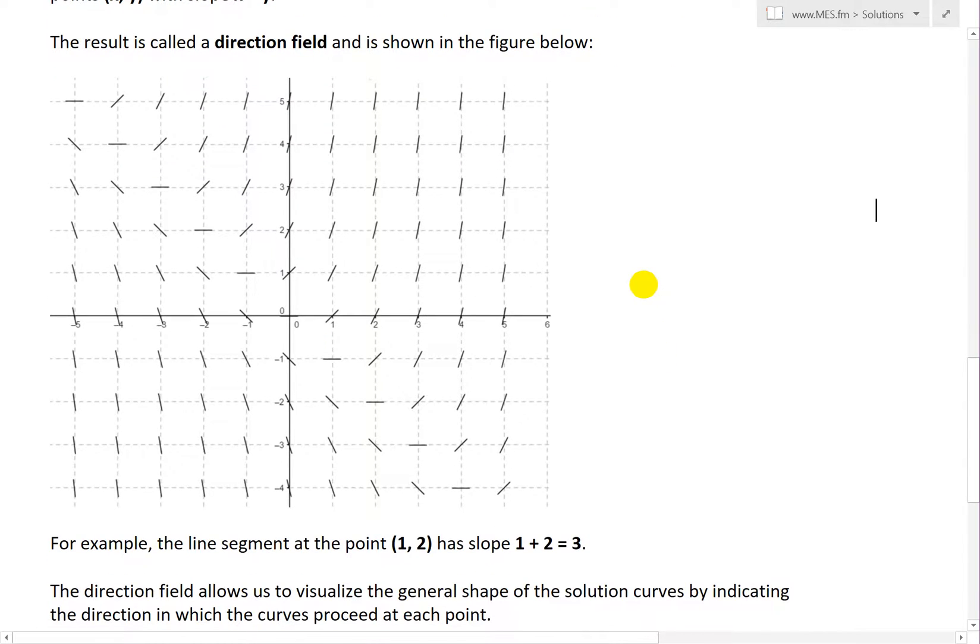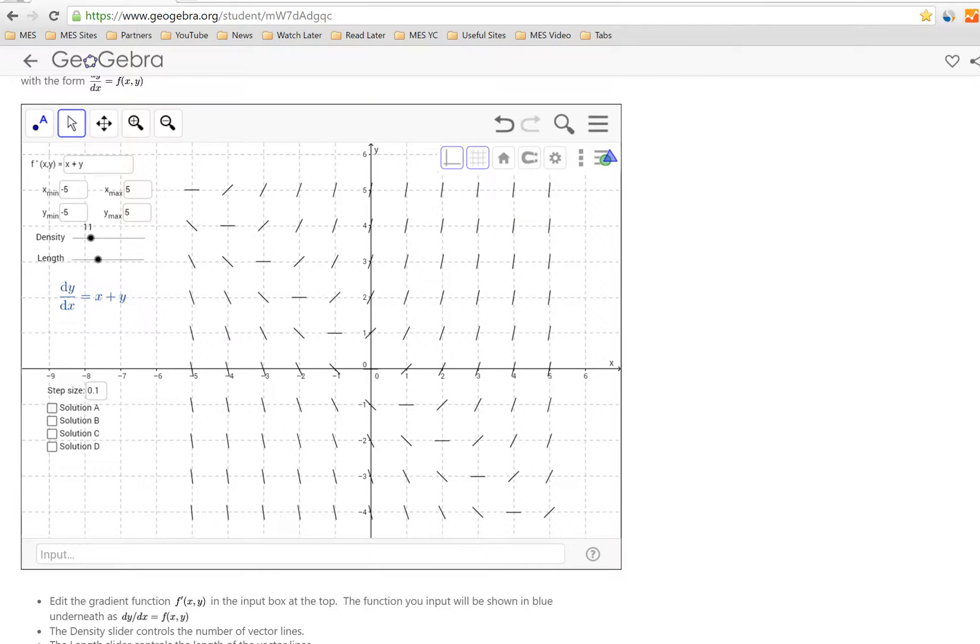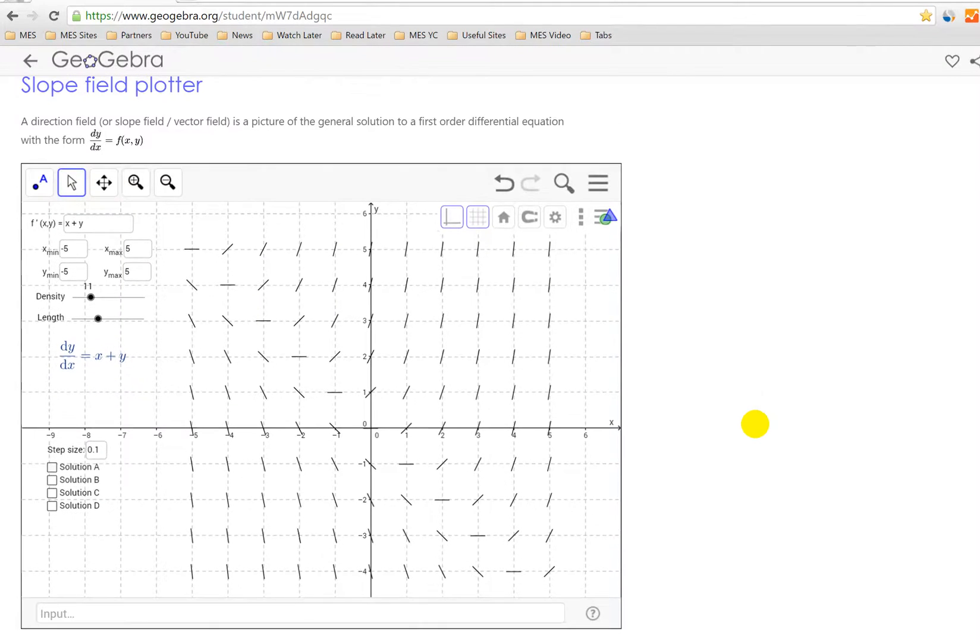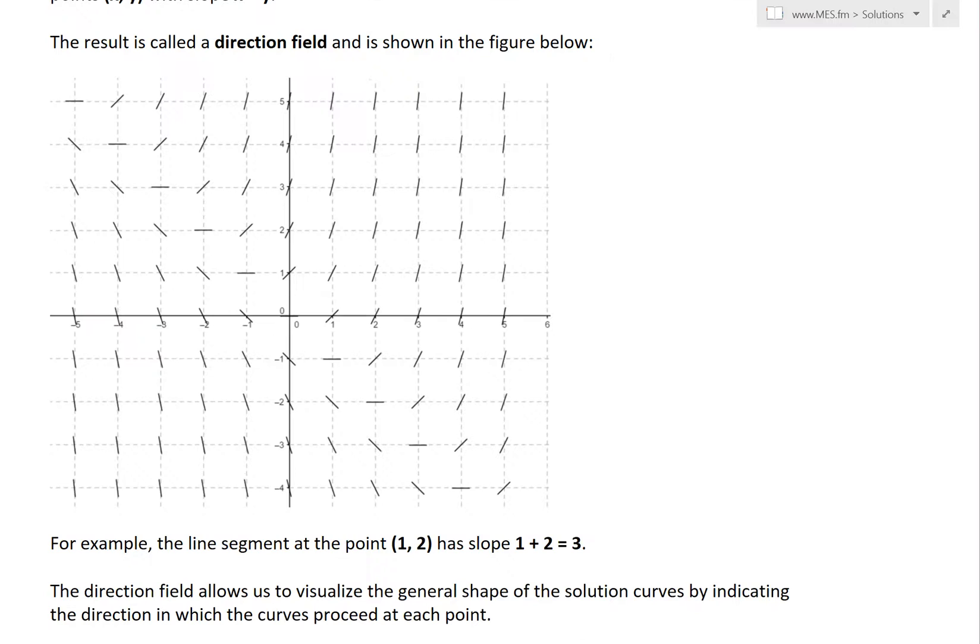This right here, I got this from just googling a direction field generator. This one is the differential equation f' = x + y, or dy/dx = x + y, the same thing as our y'. As you can see here, this is at every point. Every single point here has different slopes across. I've copied and pasted that here, put the x and y axis like that.